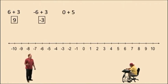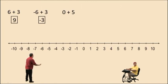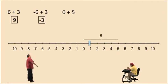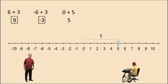Let's do 0 plus 5. Don't get confused by how easy it is. Charlie, we start at 0, we move to the right 5 units and what do you get? 5. Very nice there, Charlie. It is 5.